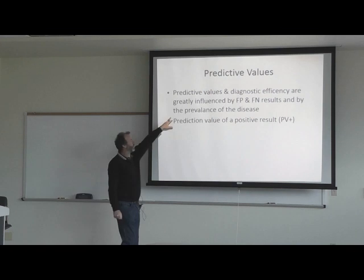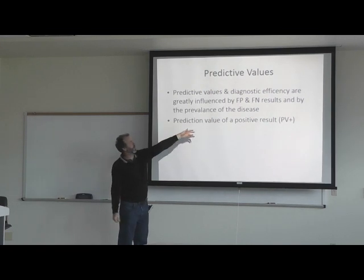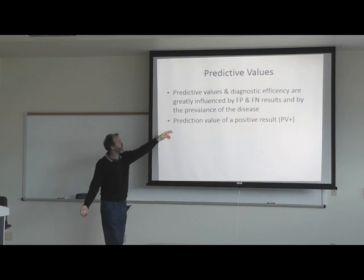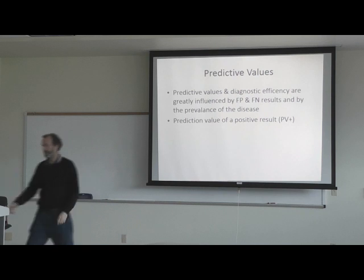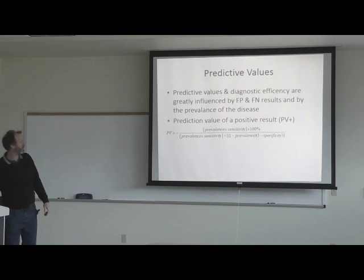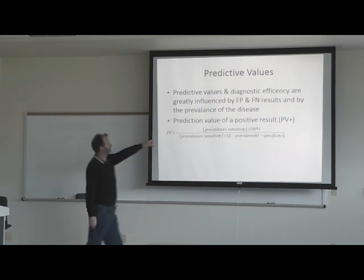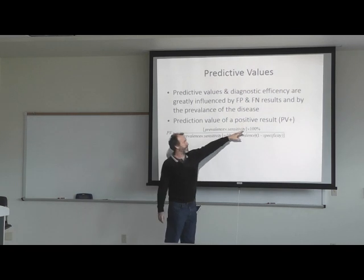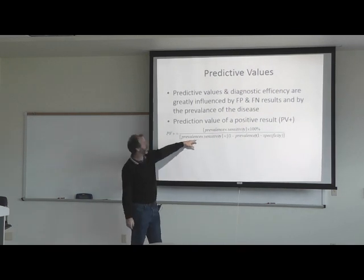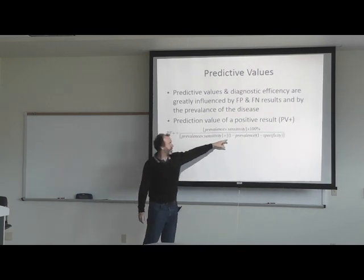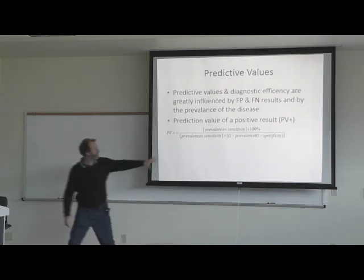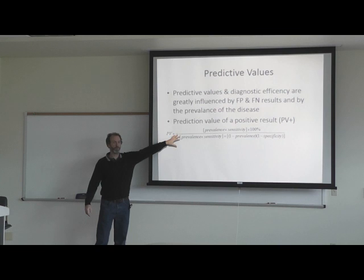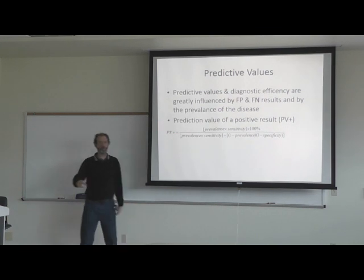Predictive values and diagnostic efficiency are greatly influenced by false positive and false negative results and the prevalence of the disease. The predictive value of a positive result, PV+, can be defined as the prevalence times the sensitivity times 100%, divided by the prevalence times the sensitivity plus 1 minus the prevalence times 1 minus the specificity. There's another equation in the math book.